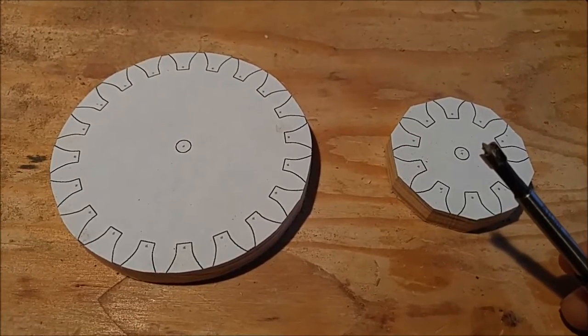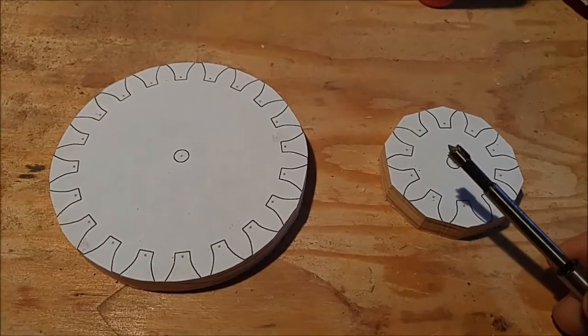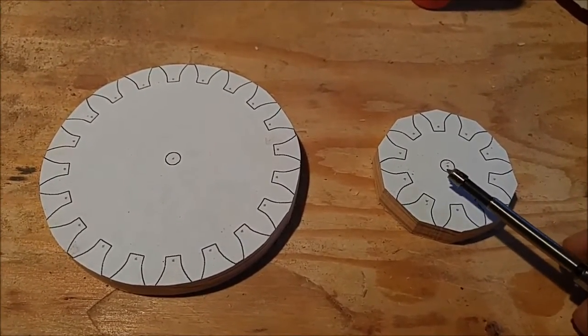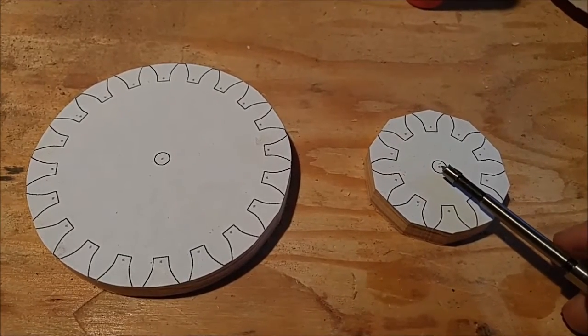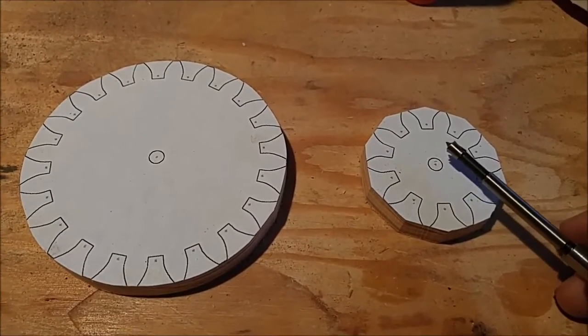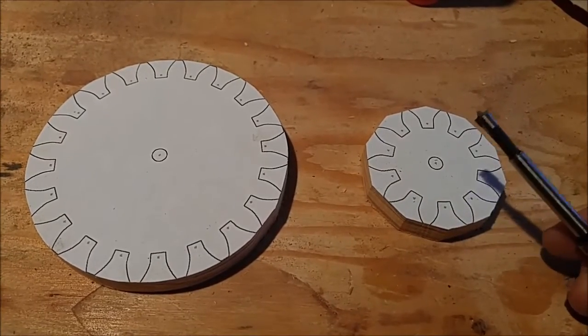One is that the Forstner bit has a really fine tip to it, so I believe that's going to help more accurately locate where I need to drill. Also, I don't think I'm going to need to use a center punch with the Forstner bit.